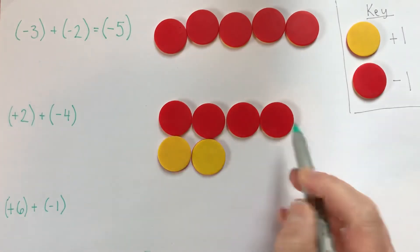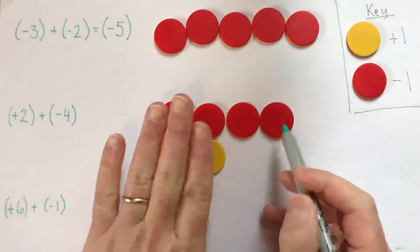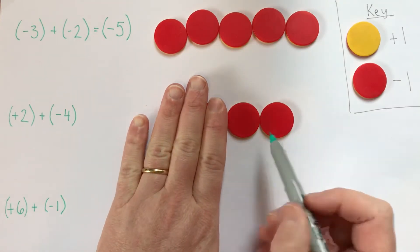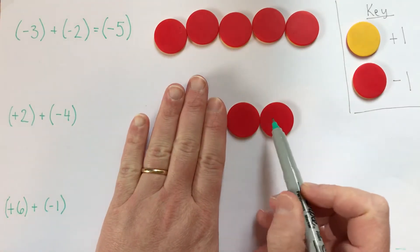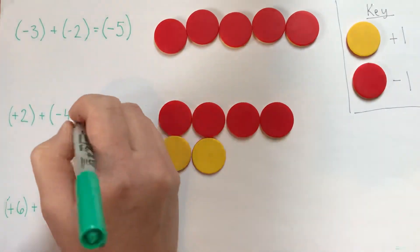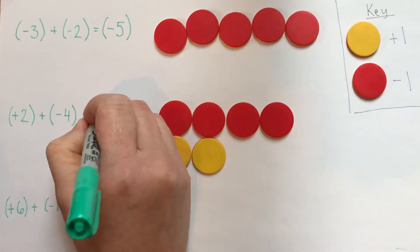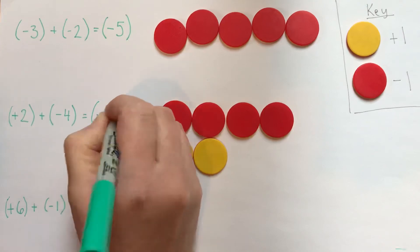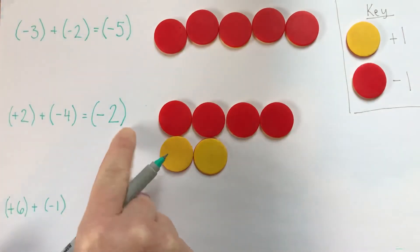so this whole thing is worth negative two. If you like, you can remove those zero pairs entirely to show that it's just negative two. These brackets are optional.